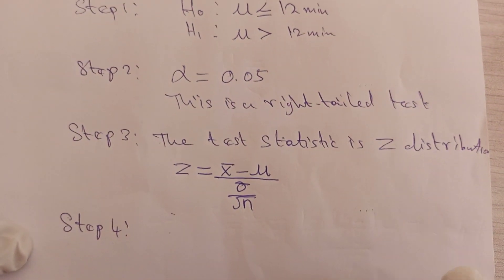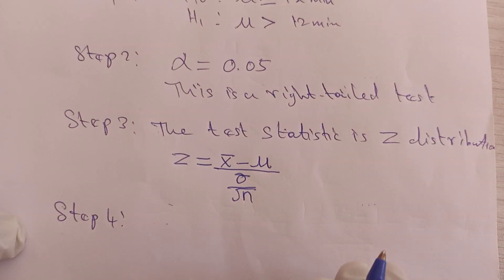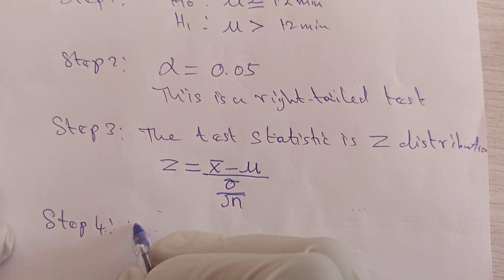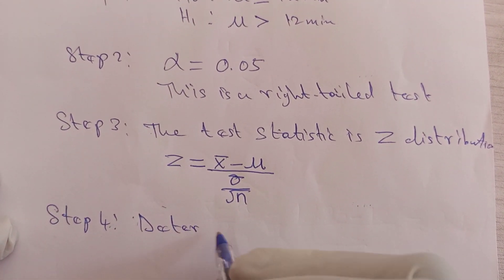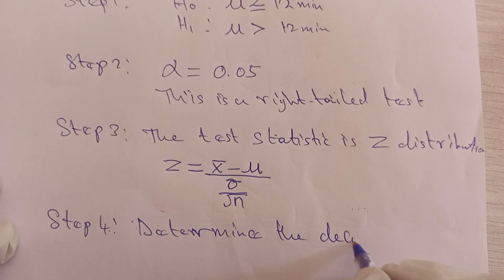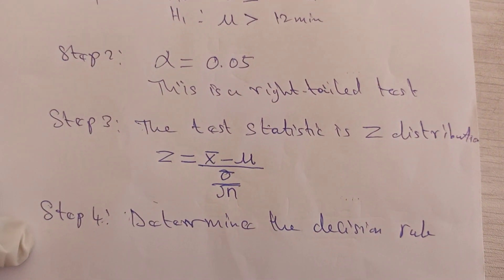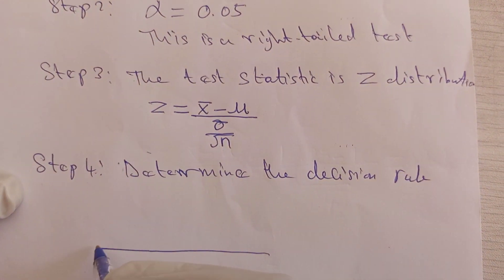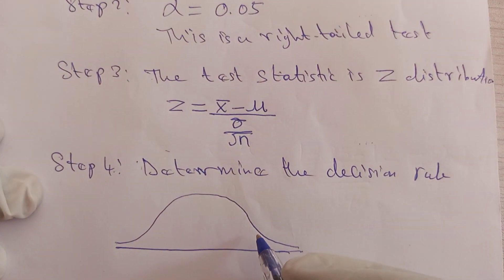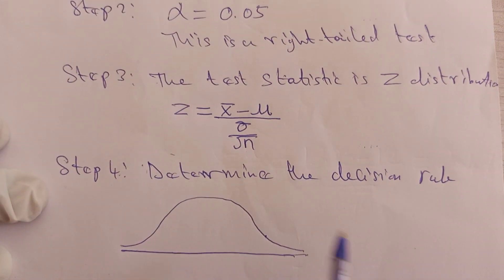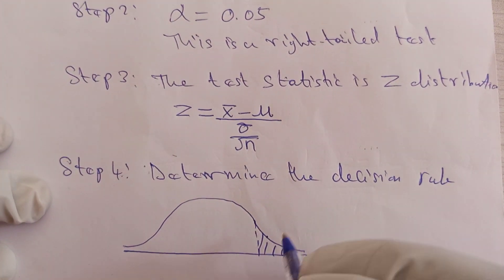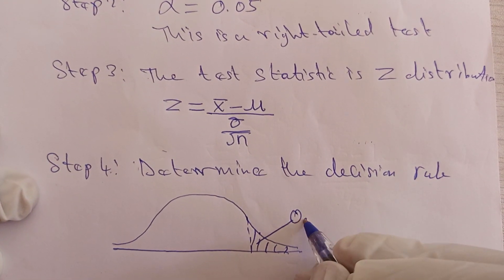In step four, you are going to find the critical value of Z and the computed Z so you can compare them. You are going to determine the decision rule. To determine the decision, you can sketch a curve. Is this a right-tail test or left-tail? It's a right-tail test. Since it's a right-tail test, you indicate this part. The level of significance is 0.05, so this area is 0.05 and it's called the area of rejection.